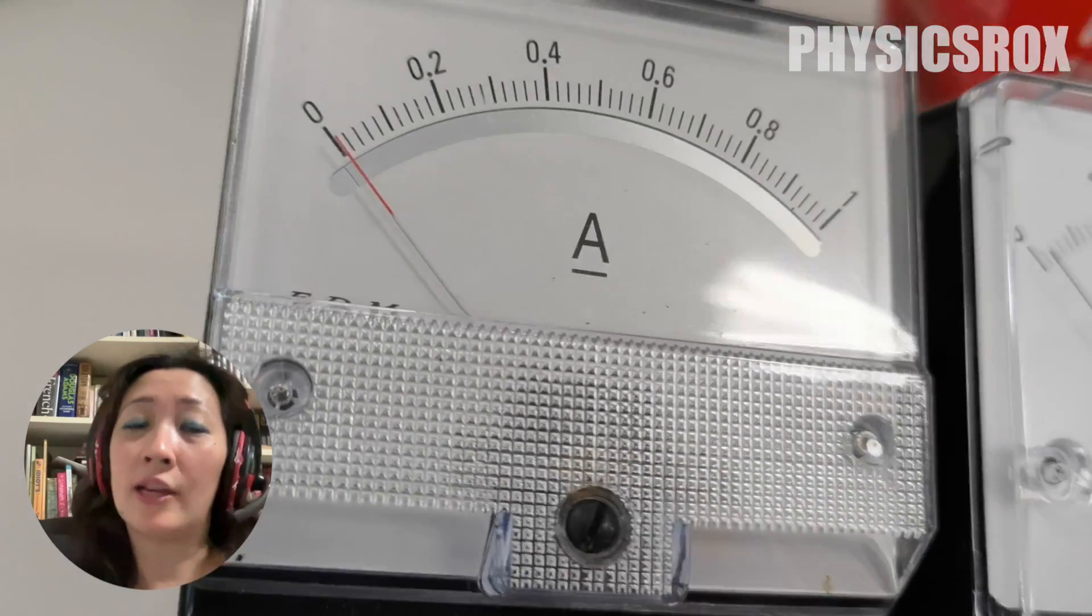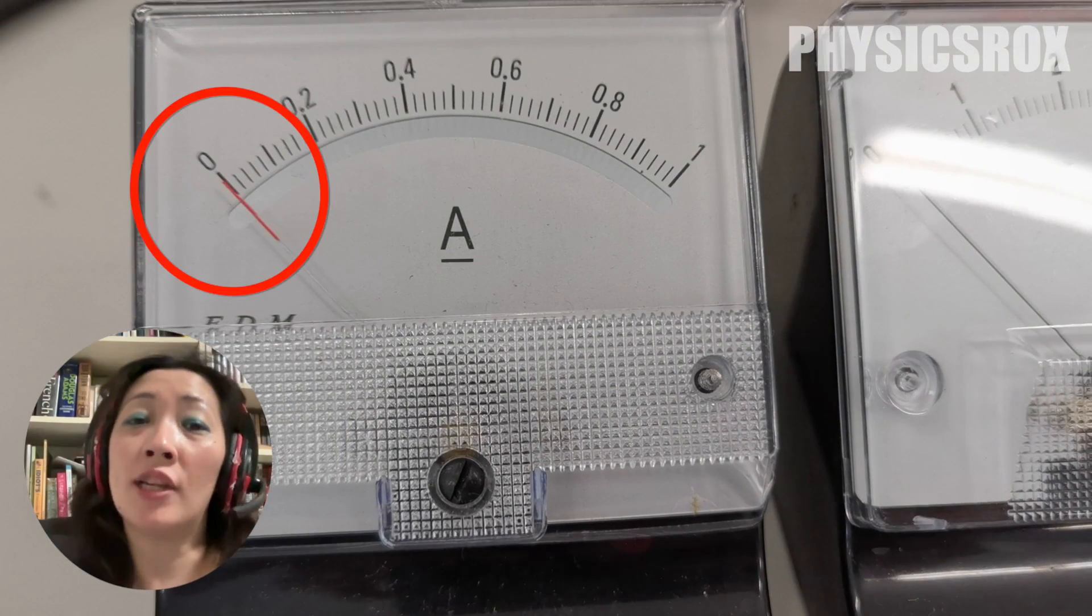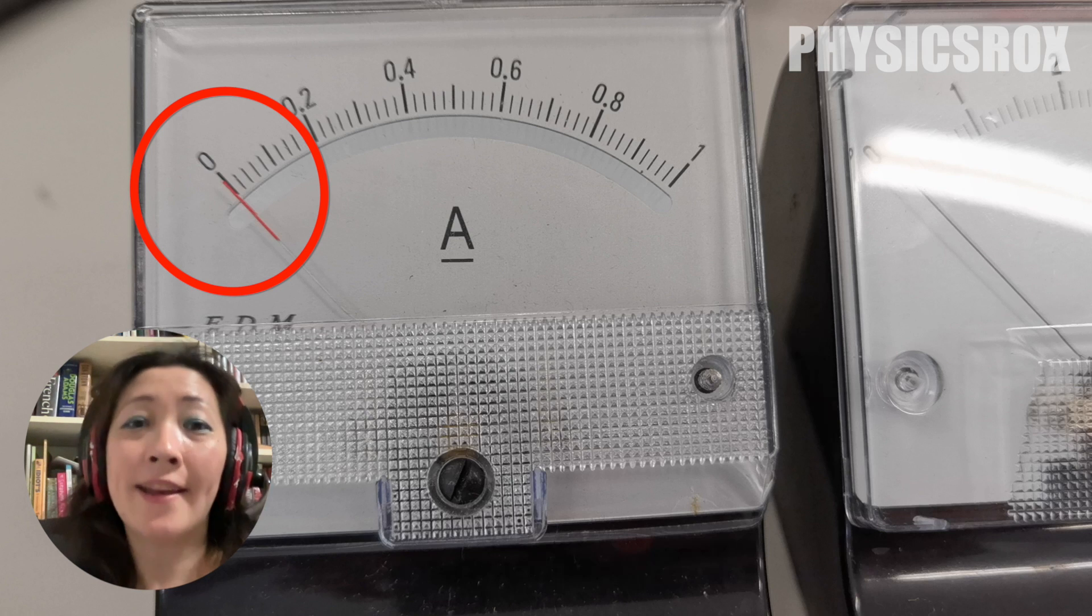How do we do this? By ensuring that when we look at the reading on the scale, we position our eye in such a way that the needle directly overlaps its own reflection in that mirror.